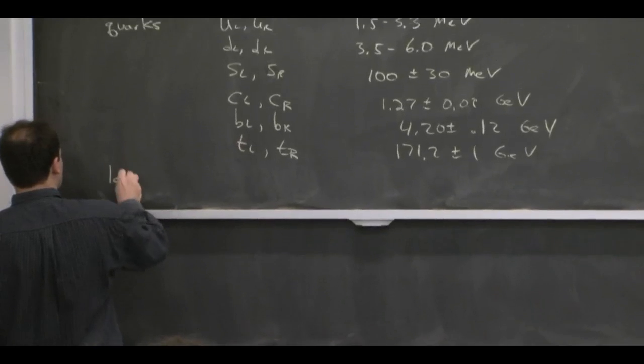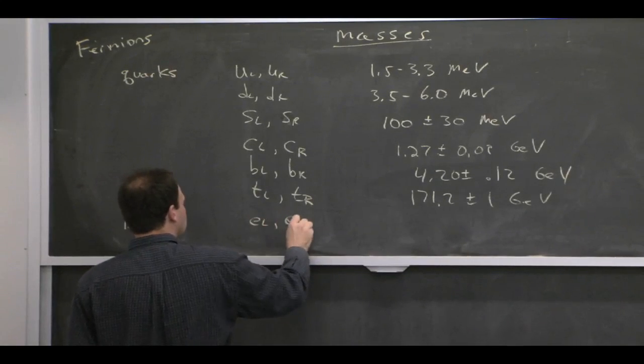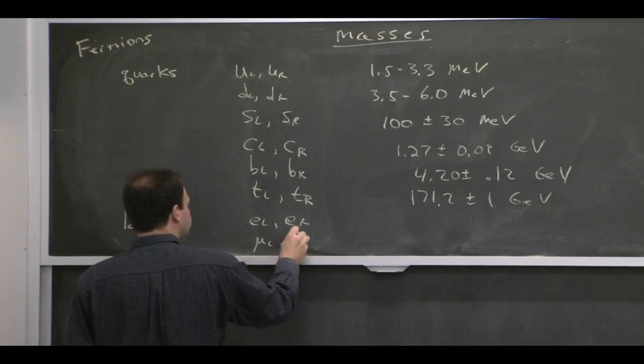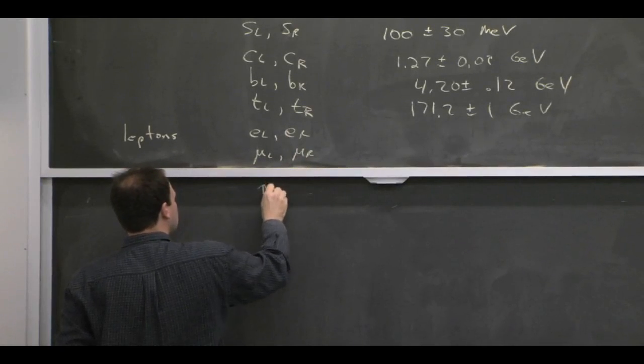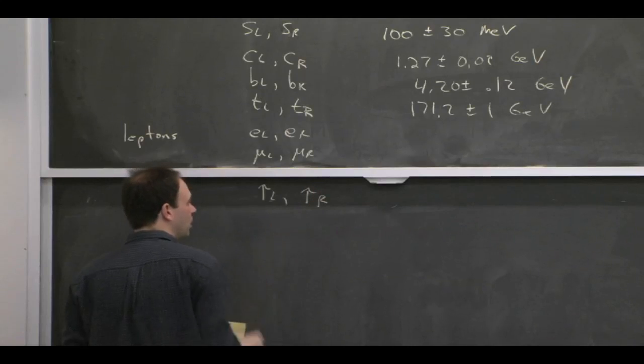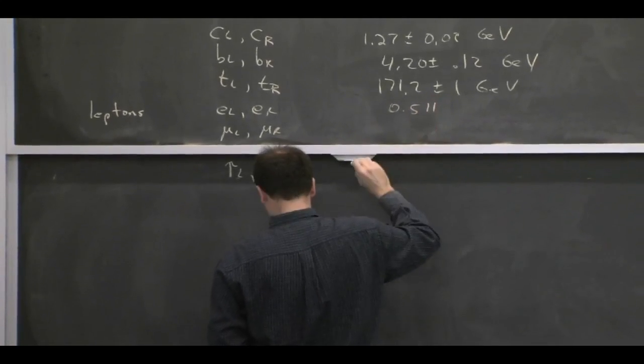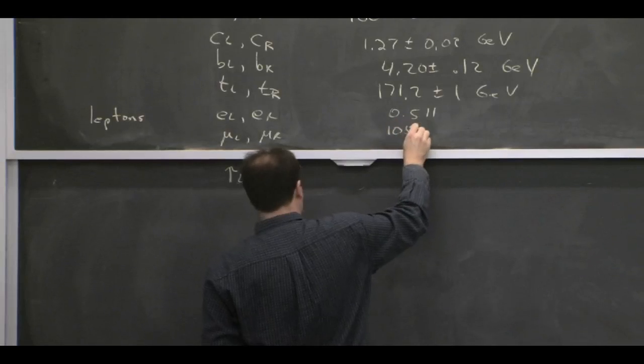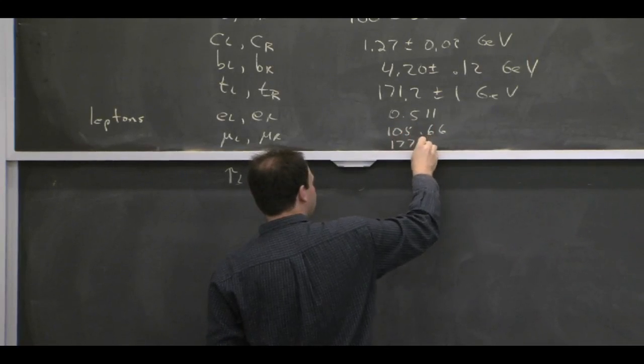And then we also have the leptons, three types of charged leptons, again, with a fairly wide range of scales. So now I'm switching back to MeV just to keep you on your toes.